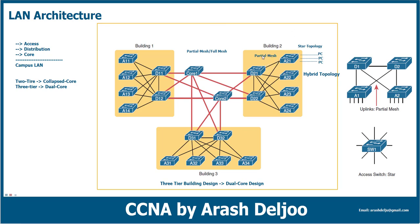The distribution layer switch uses partial mesh on the access layer side and possibly full mesh on the core side, making it hybrid as well. If both sides use partial mesh, then the distribution layer is working with partial mesh topology. This concludes our review of campus LAN topologies and terminology. Now let me give some information about the small office home office network.